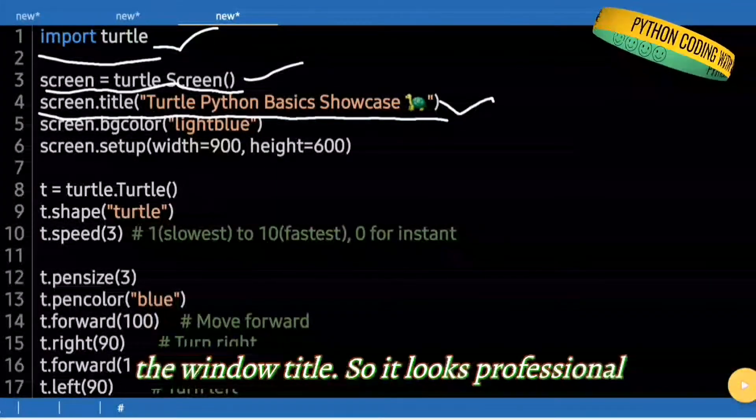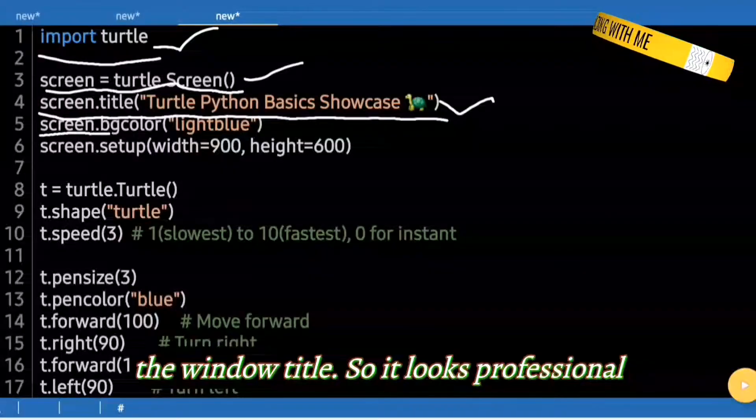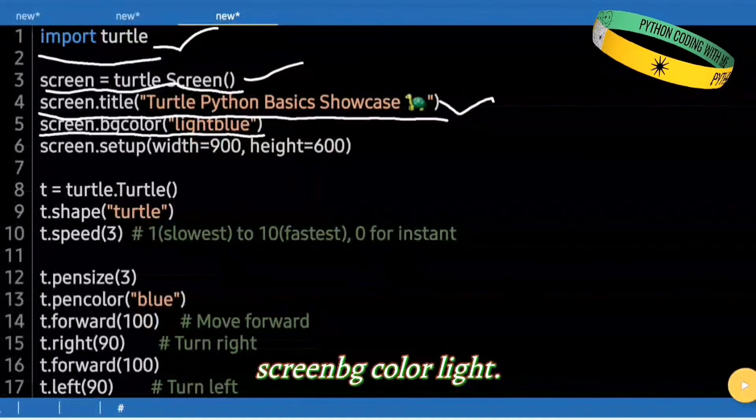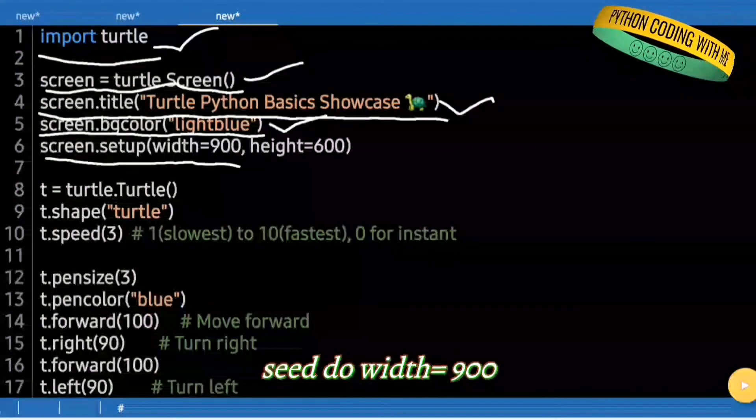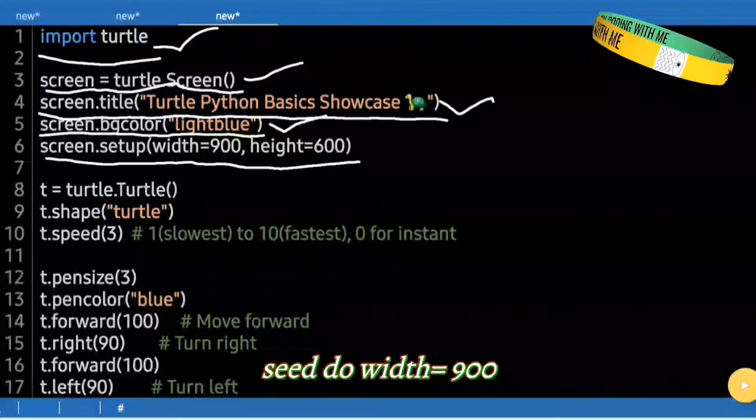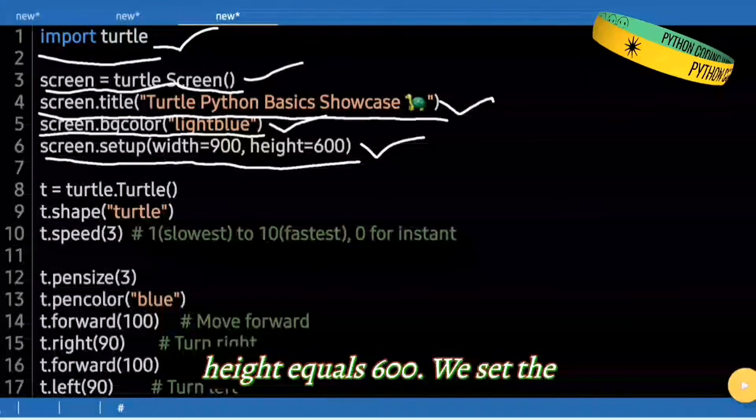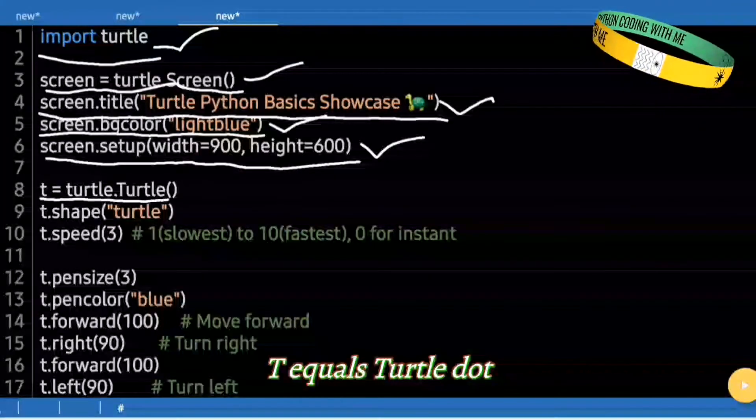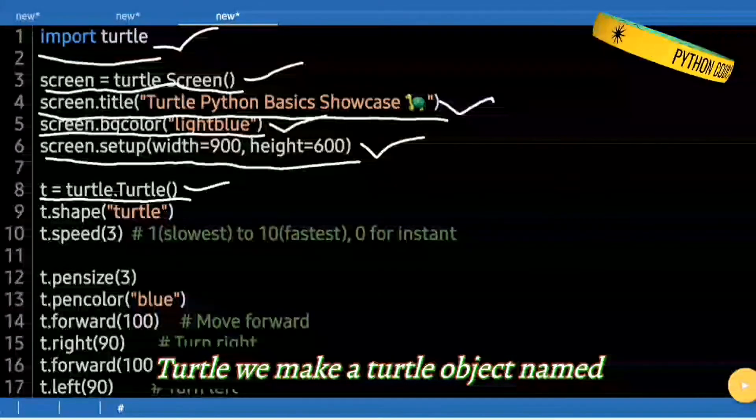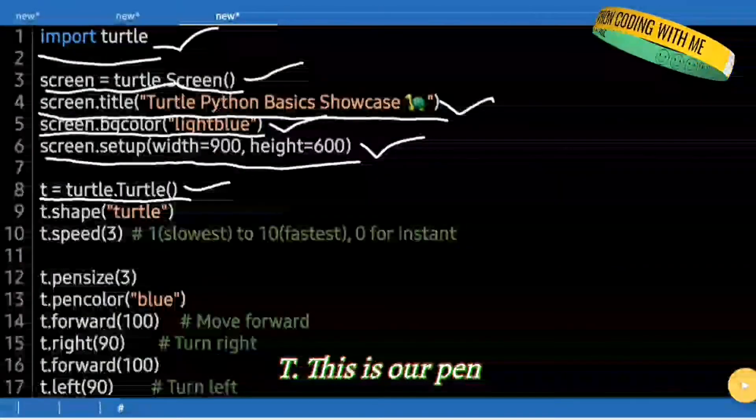We set the window title so it looks professional. We change the background color to light blue. We set the window size to 900 by 600 pixels. T equals Turtle.Turtle. We make a Turtle object named T. This is our pen.